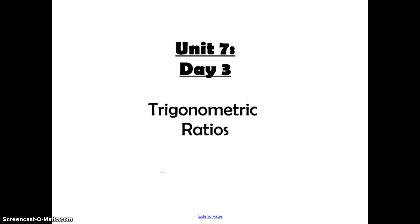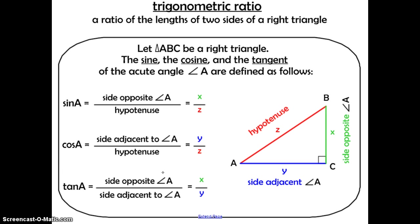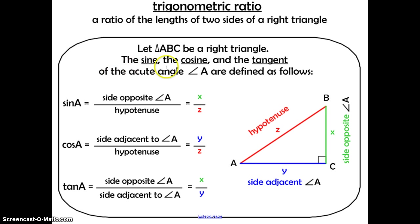Trigonometric Ratios. A trigonometric ratio is a ratio of the lengths of two sides of a right triangle. Below in the diagram, it says let triangle ABC be a right triangle. So here we have triangle ABC, and it has a right angle at angle C. The sine, the cosine, and the tangent of the acute angle A are defined as follows.